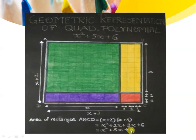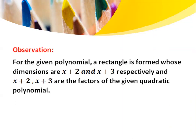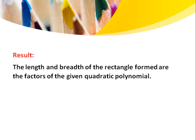This means the two sides of the rectangle represent the factors of this polynomial. So x plus 2 and x plus 3 are the sides — you get a rectangle whose sides are the factors of the given polynomial. Finally, the result is that the length and breadth of the rectangle are the factors of the given polynomial. Hope you are able to understand this activity. Thank you, everyone.